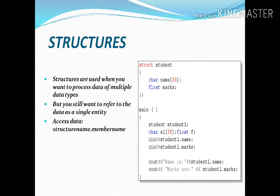The next part to discuss is structures. Structures are used where you want to process data of multiple data types but still refer to the data as a single entity. Accessing data in a structure uses: structureName.memberName. For example: struct student { char name[30]; float marks; }. The syntax and order are declared in C++; if you want to convert to C or another language you can do so.